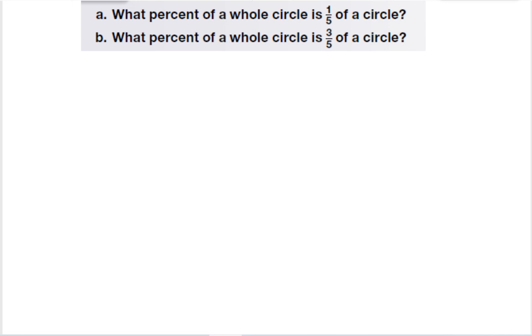Now this last part is asking about percents. What percent of a whole circle is one-fifth of a circle? Well, I know that a whole circle, the percent of a whole circle, will be one-hundred percent. So on this first part, because I just need to know one-fifth, or one piece, I can go ahead and just divide this by five, and it will tell me my answer. So one-hundred percent divided by five is twenty percent. So one-fifth of a circle is twenty percent.